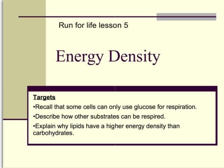Outcomes for the first part: for an A grade, explaining why lipids have a higher energy density than carbohydrates. For a B grade, describing how other substrates are respired — where they feed into respiration overall. And then for a C grade, remembering that some cells can only use glucose for respiration, which we'll talk about shortly.